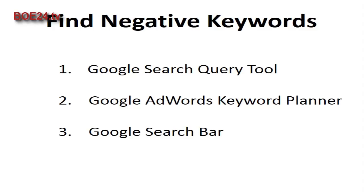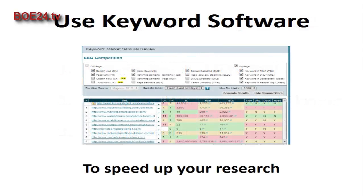You can research potential negative keywords using the Google Search Query tool, the Google AdWords Keyword Planner, and the Google search bar. When you plan your ad campaign, you'll be able to list your negative keywords to prevent your ads from being shown for those search terms. This ensures that you're targeting the right visitors and buyers for your website.